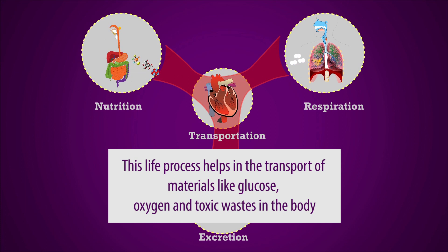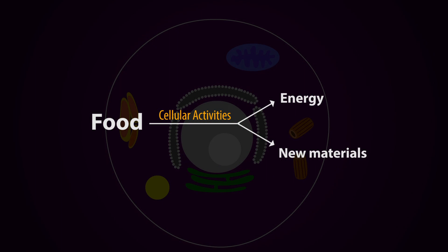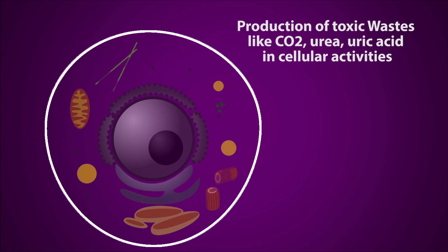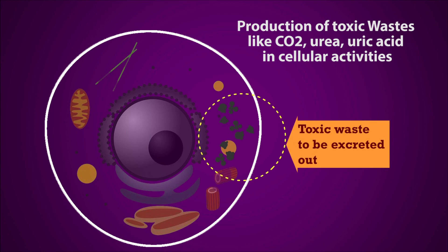Cells get oxygen and nutrients through these three life processes. Cells use these materials for the production of energy and to make new complex molecules. In these cellular reactions, toxic materials like carbon dioxide and urea are produced, and these toxic materials are to be sent out of the body.